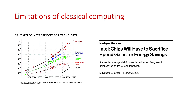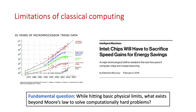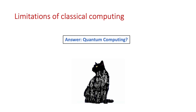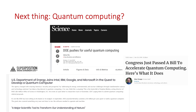Such limitations of classical computing have been somewhat alleviated by improving the quality of microprocessors. Moore's law states that the number of transistors in an integrated circuit chip roughly doubles every two years. However, while hitting such basic physical limits, does there exist anything beyond Moore's law to solve such computationally hard problems? The answer seems to be quantum computing. There has been a tremendous push by the Department of Energy of the United States for useful quantum computing, and also a race for quantum supremacy across countries — the goal being to demonstrate that a programmable quantum computer can solve a problem that no classical supercomputer can solve in any feasible amount of time.